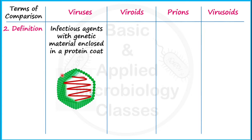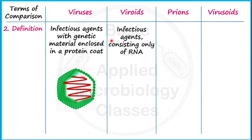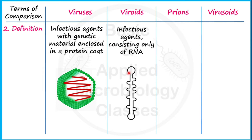The protein coat in viruses is called the capsid, and the protein subunits forming the capsid are called capsomeres. Viroids are infectious agents consisting only of RNA — they have no protein coat. Their structure is rod-shaped: single-stranded RNA forms the viroid, and this single-stranded RNA is covalently closed at the ends, forming a rod-shaped structure due to intrastrand base pairing. Because of this pairing it is sometimes mistaken for double-stranded, but it is actually single-stranded.